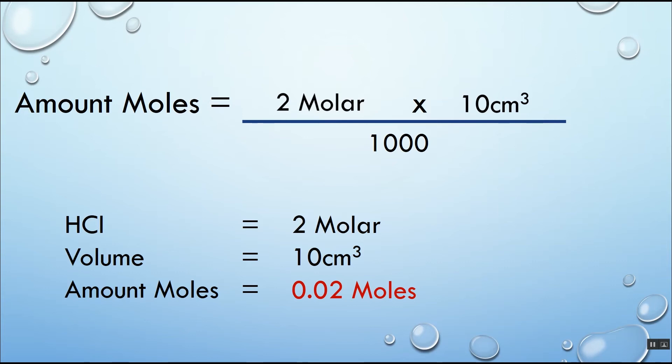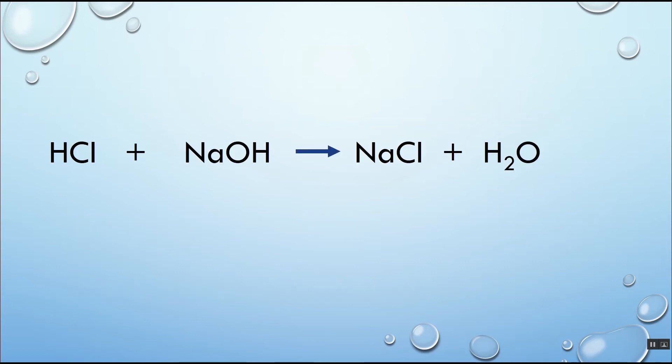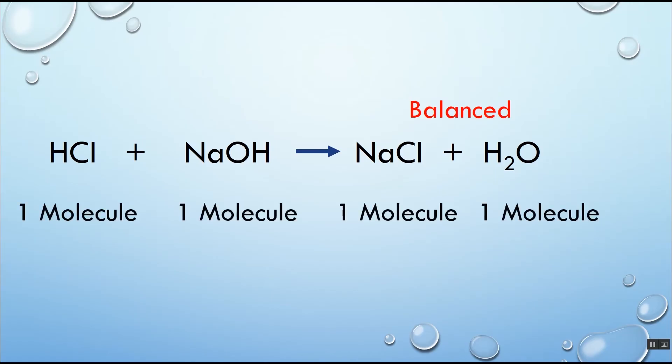Now we've got the calculation, let's look at the equation. HCl plus NaOH gives us NaCl plus H2O. We've got a balanced equation, so one molecule of HCl reacts with one molecule of NaOH to give one molecule of NaCl plus one molecule of H2O. We can rearrange that to say that one mole of HCl reacts with one mole of NaOH, which gives one mole of NaCl and one mole of H2O.